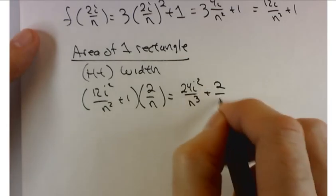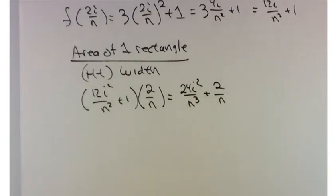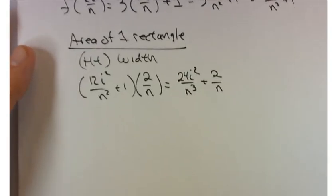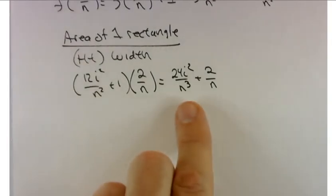So distributing that gives me 24i² over n³ plus 2. Is it 2 over n or 2i²? Good question. It's 2 over n. 2i over n is the point where you're finding the height, but the width is just 2 over n. Good question.